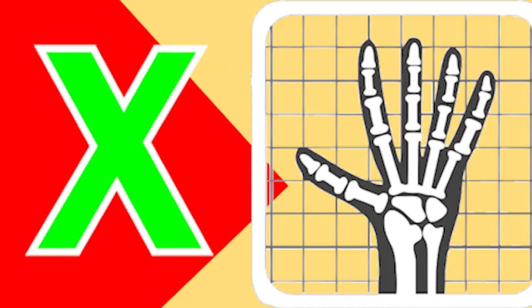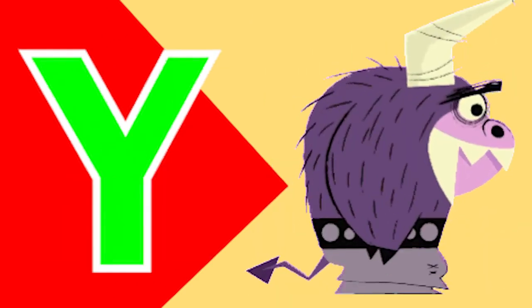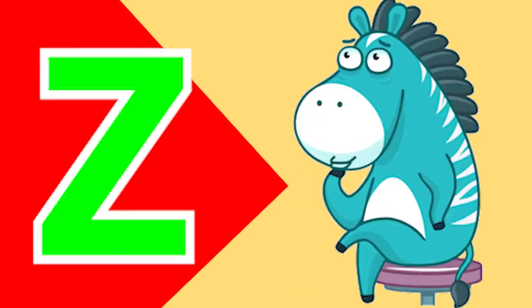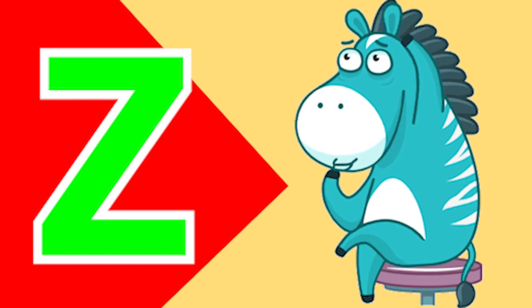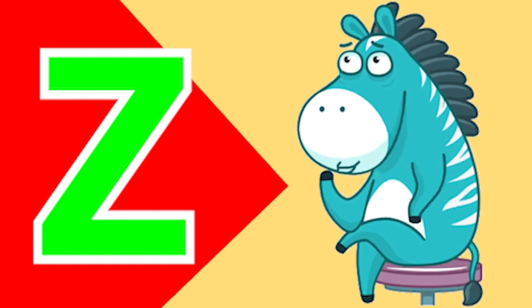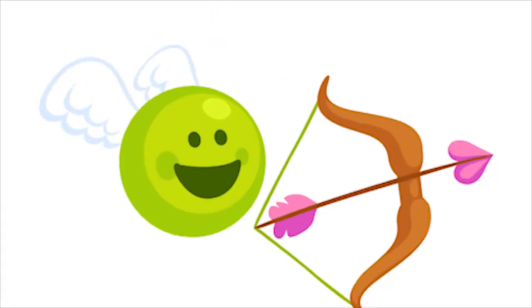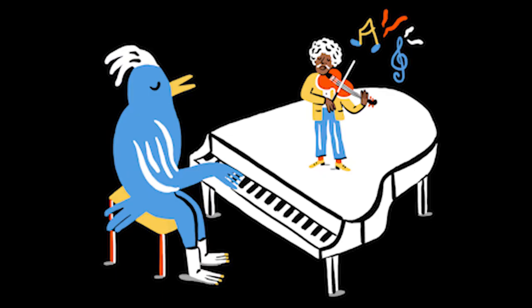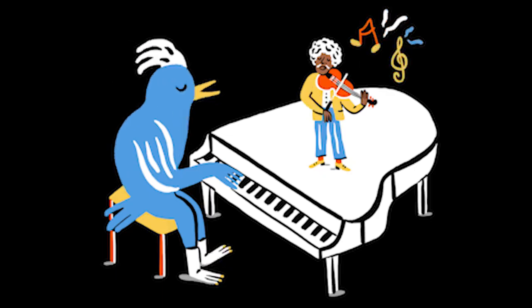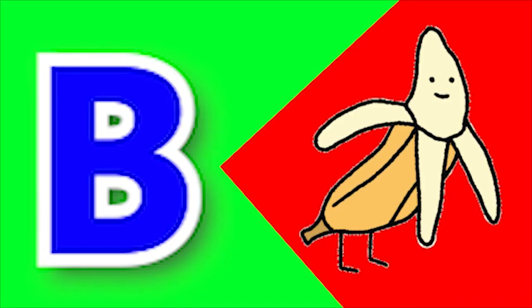X for x-ray, Y for yacht, Z for zebra. A for arrow, B for banana.